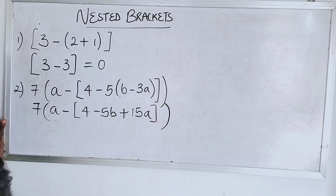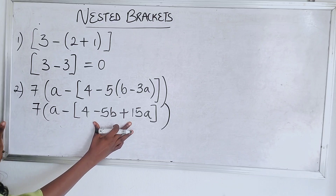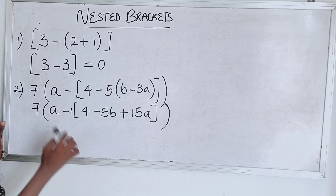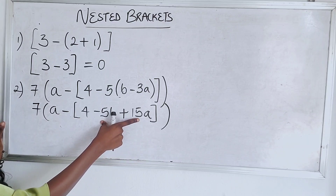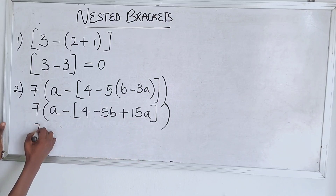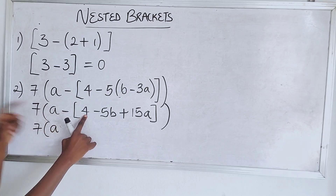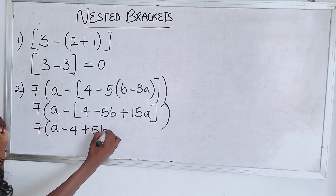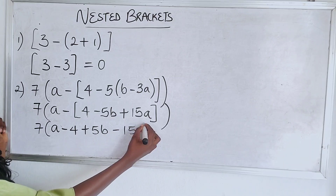Moving to the next bracket — the square bracket. We use minus one (since we usually don't write the 1) to open this second bracket. So we have seven a, then minus one times 4 gives minus 4; minus one times minus five b — minus times plus is minus — gives minus five b; minus one times plus 15a — minus times plus is minus — gives minus 15a. Close your last bracket.